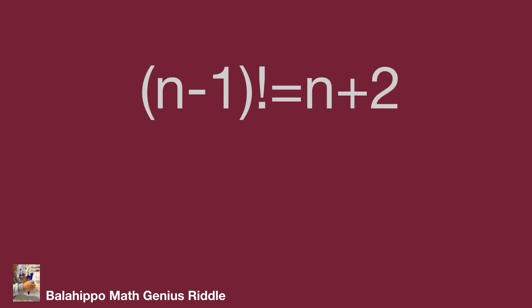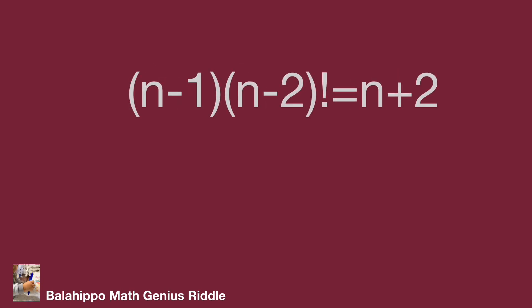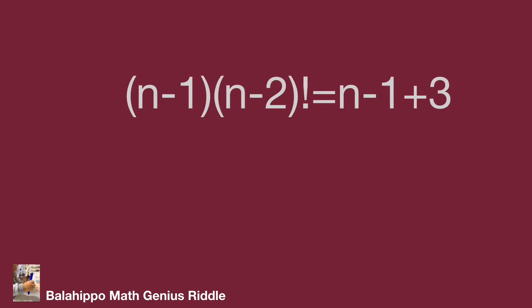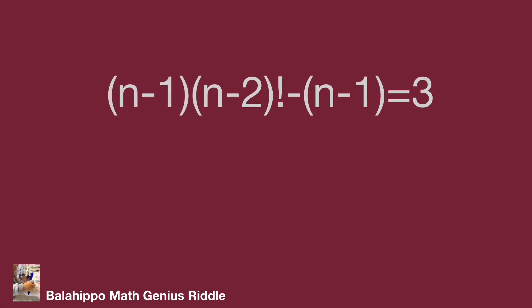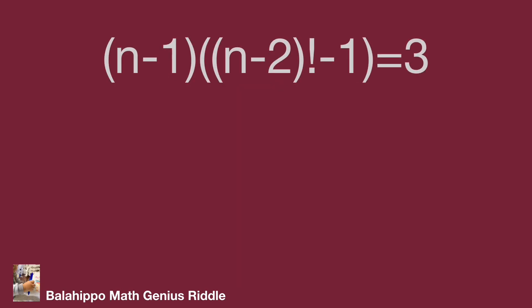Therefore, let's check the equation (n minus 1) factorial equal to n plus 2. Rewrite (n minus 1) factorial as (n minus 1) times (n minus 2) factorial. Divide both sides by (n minus 1). Adjust the right side, n plus 2, as (n minus 1) plus 3. Then the equation becomes (n minus 2) factorial minus (n minus 1) equal to 3. Factorize as (n minus 1) multiplied by (n minus 2) factorial minus 1, equal to 3.